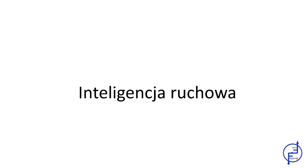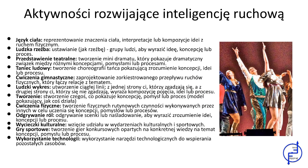Zobaczmy, jak możemy korzystać z inteligencji ruchowej. Inteligencja ruchowa polega na użyciu ciała jako narzędzia do myślenia i nauki. Możemy korzystać z: tworzenia żywej rzeźby ciał pozwalającej grupie ludzi wyrażać idee, koncepcje lub procesy, występów dramatycznych, ćwiczeń gimnastycznych, stworzenia graficznej linii ciągłej – z jednej strony ci, którzy się zgadzają, z drugiej ci, którzy się nie zgadzają – odgrywania ról, mimów, kulturowych wycieczek oraz gier sportowych.